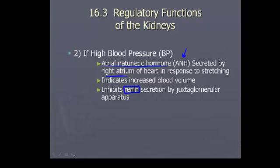If renin is not secreted by the juxtaglomerular apparatus, it doesn't allow us to produce aldosterone. Without aldosterone, there's no sodium uptake, no water following, and no increase in blood pressure.